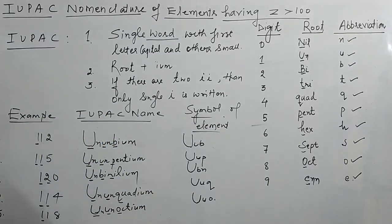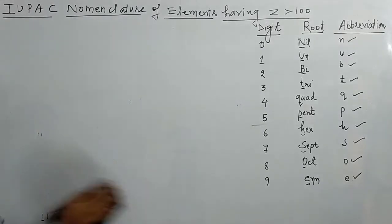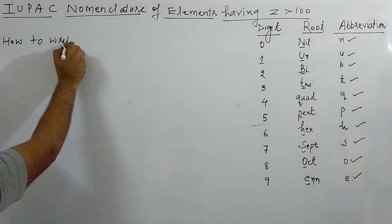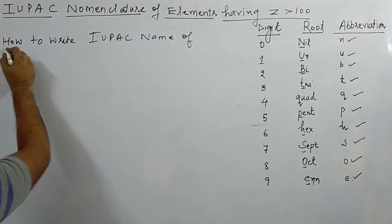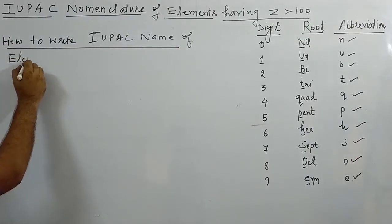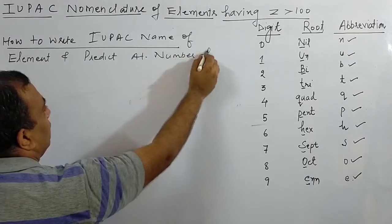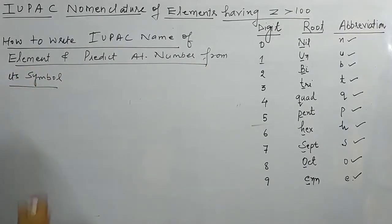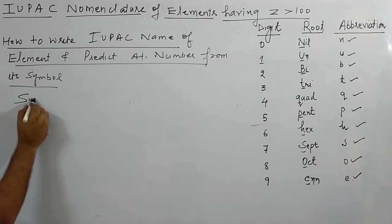Now the second part of today's lecture: how to write the IUPAC name of an element and predict the atomic number from its symbol. This is the reverse of what we have done so far — I will give you the symbol and you have to find the IUPAC name and atomic number.